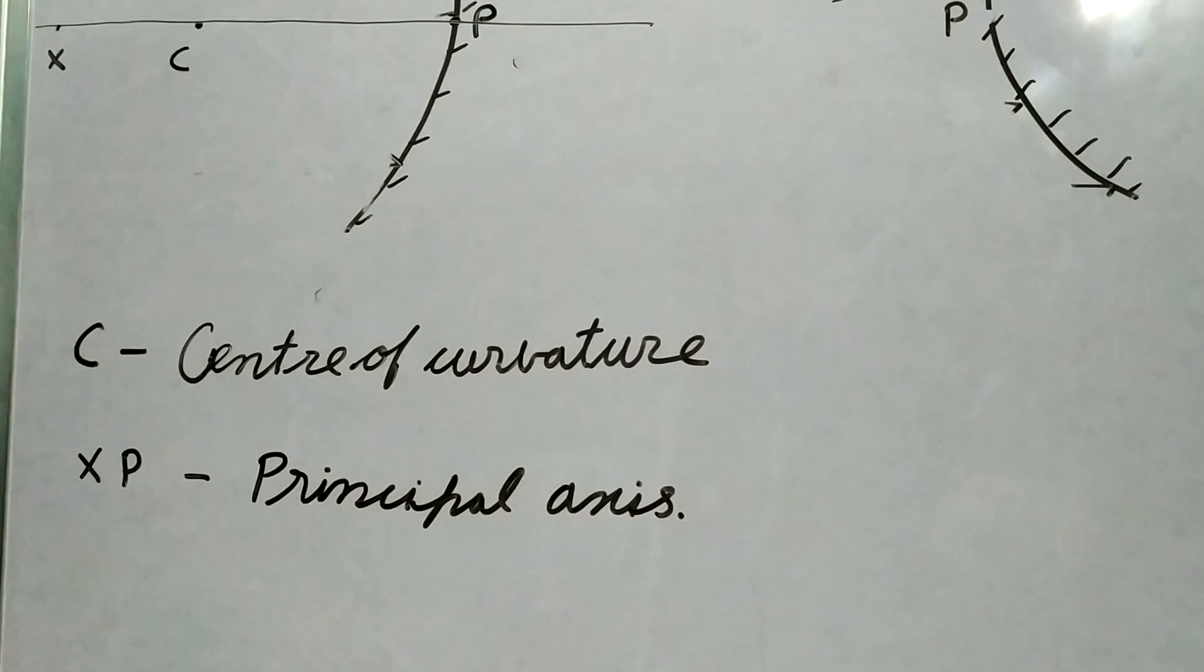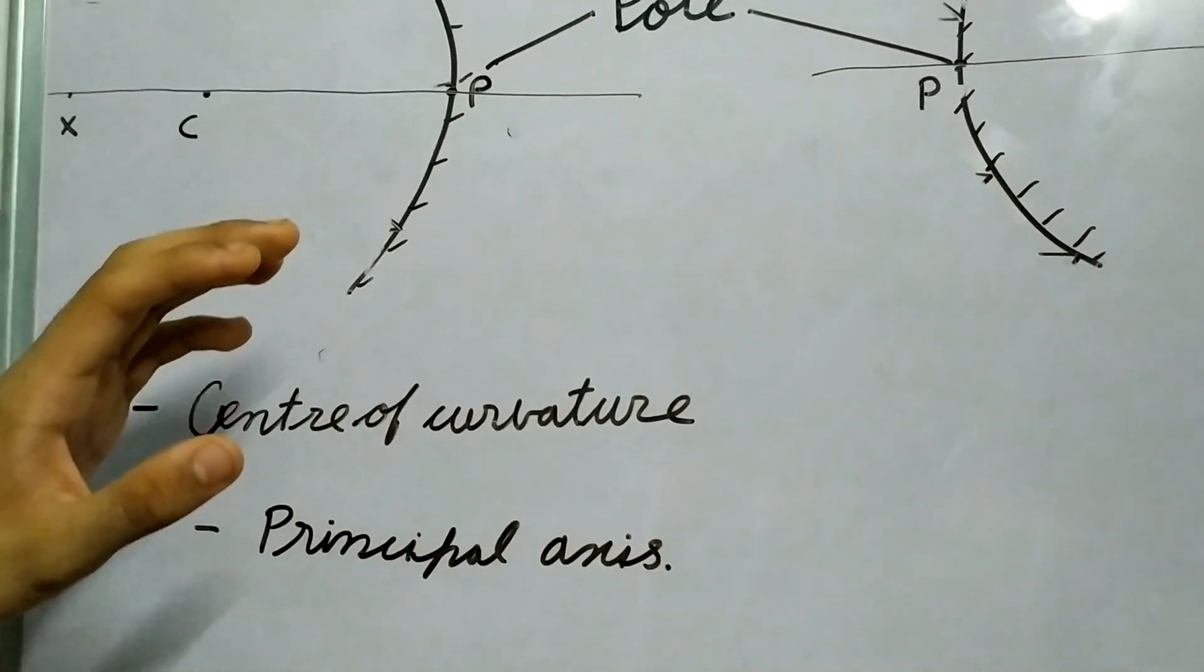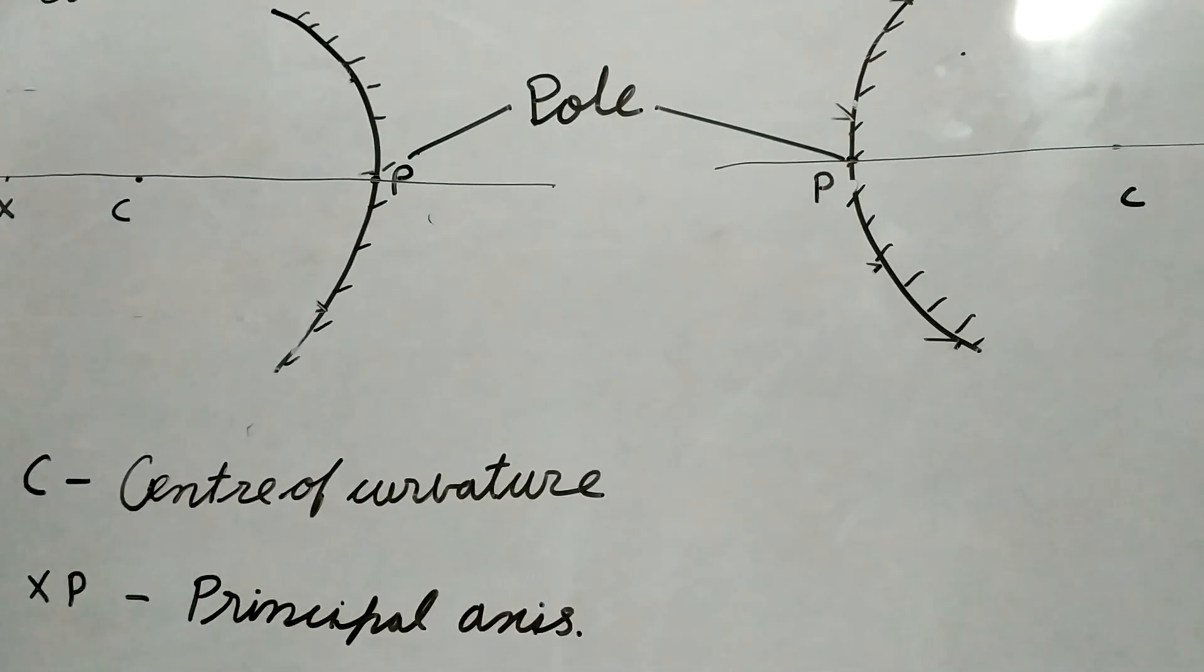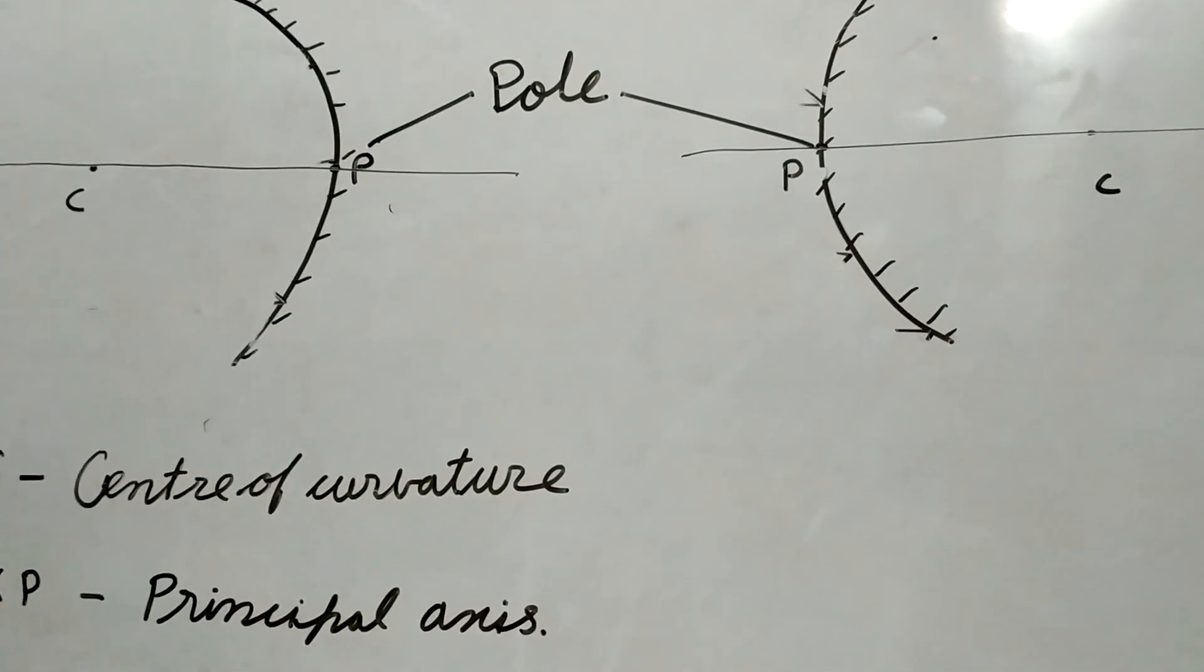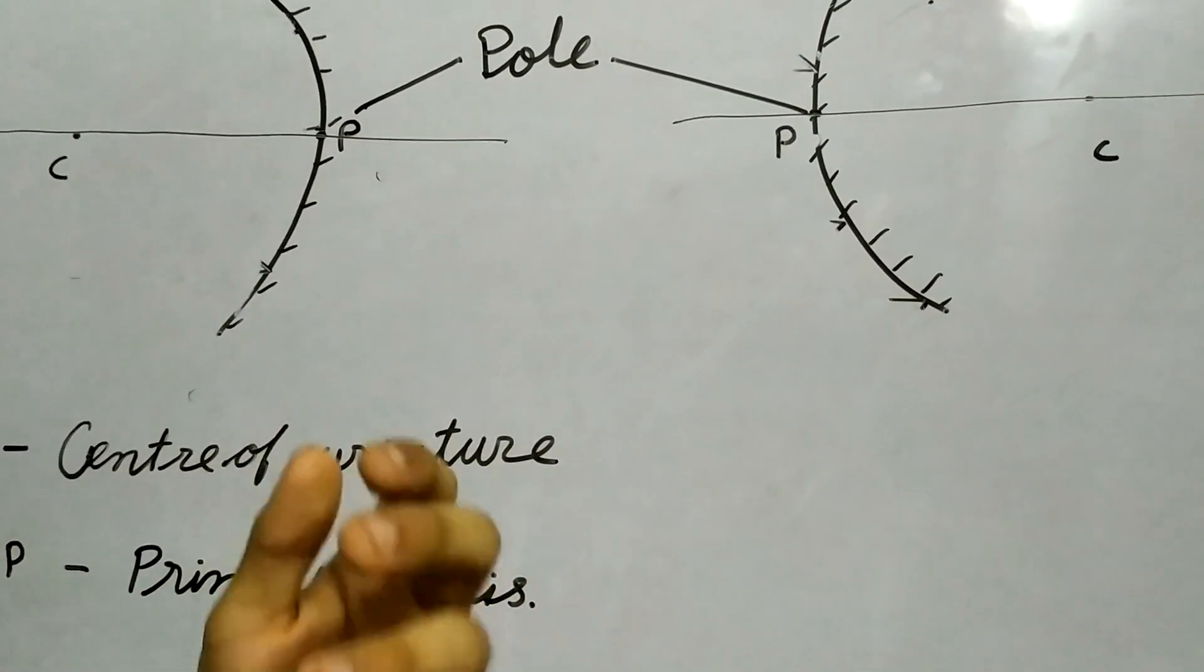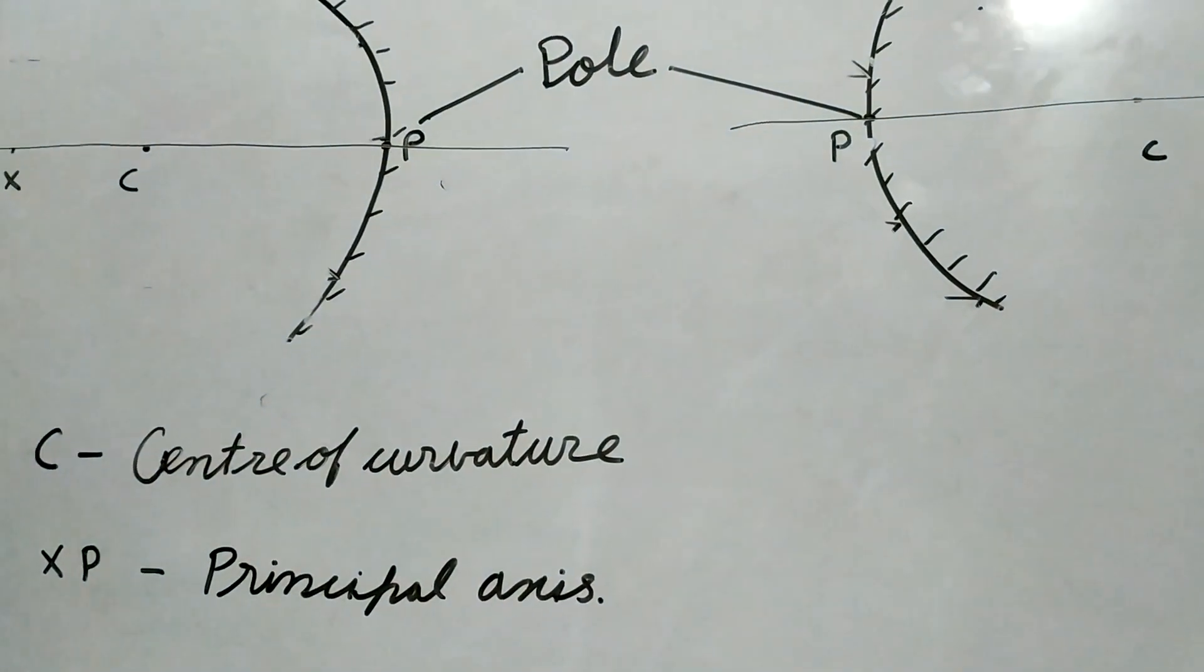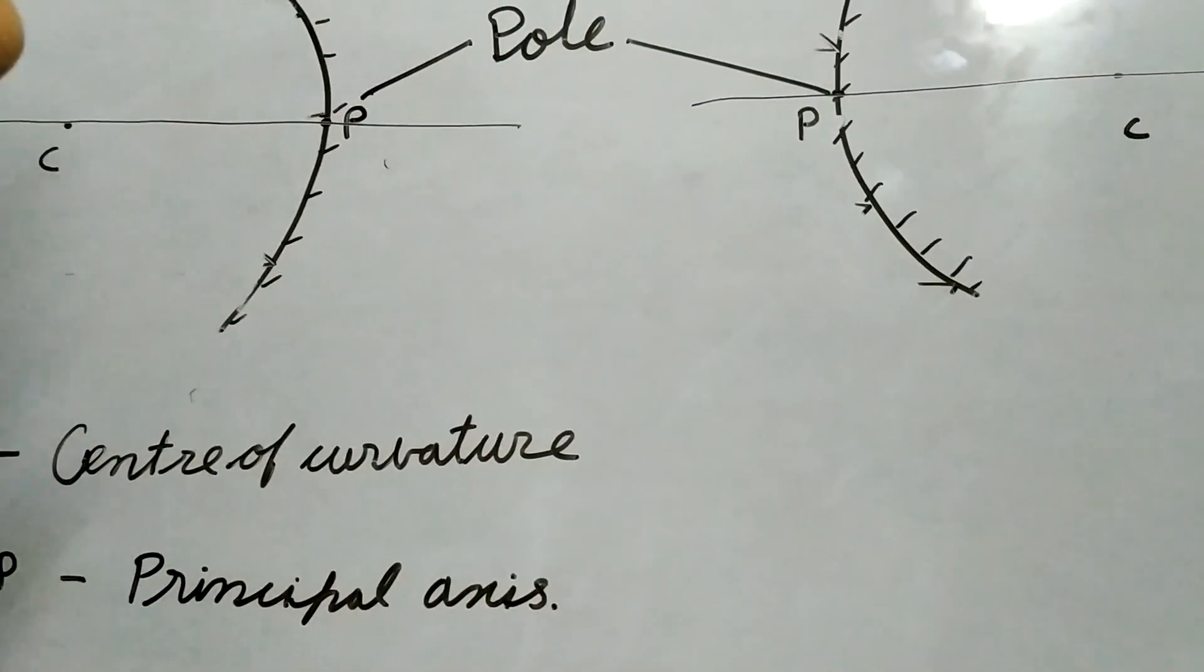An interesting property of this circle. Almost every property of a sphere or a circle can be derived using its radius. It's the only way in which we can define a sphere or a circle.